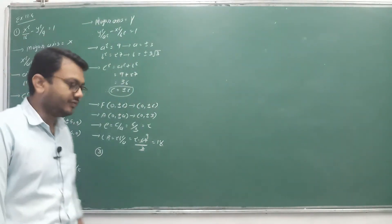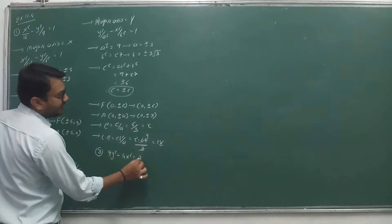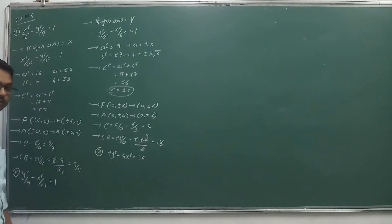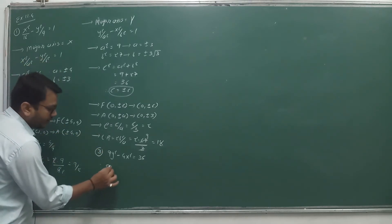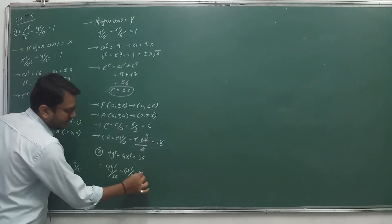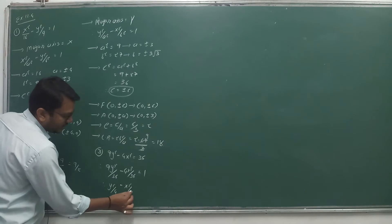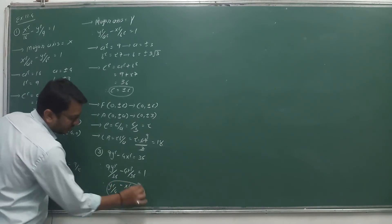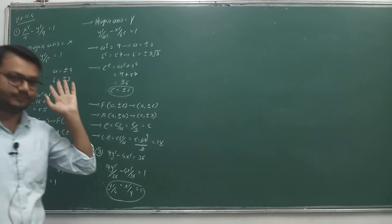For example, question 3: 9y² minus 4x² = 36. On the right side we need 1, and x and y should have no coefficients. Divide everything by 36: 9y²/36 minus 4x²/36 = 1, which gives y²/4 minus x²/9 = 1. This is the standard equation. Since y comes first, major axis is Y — this is case number 2.